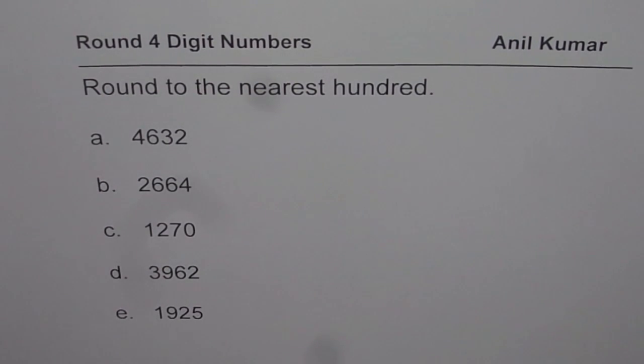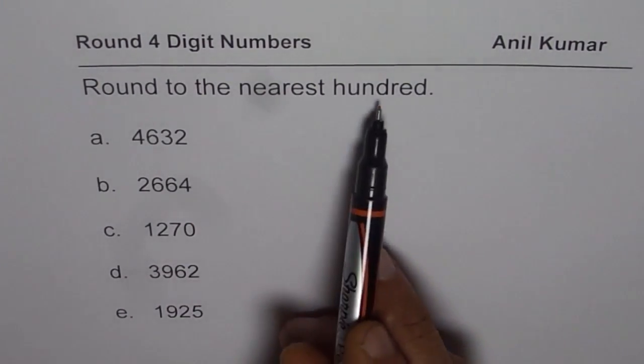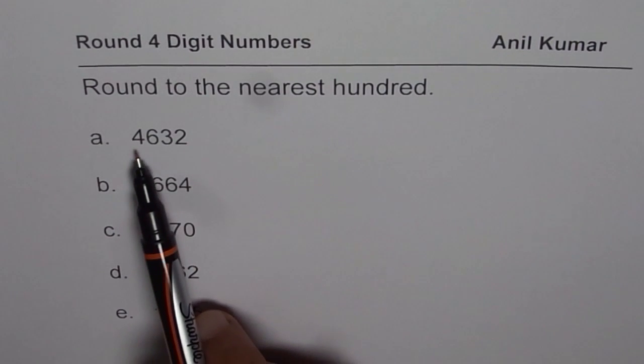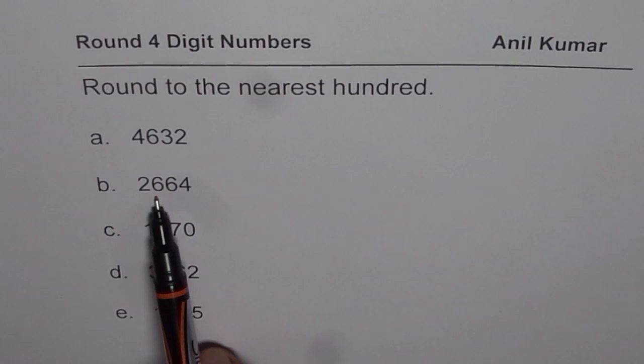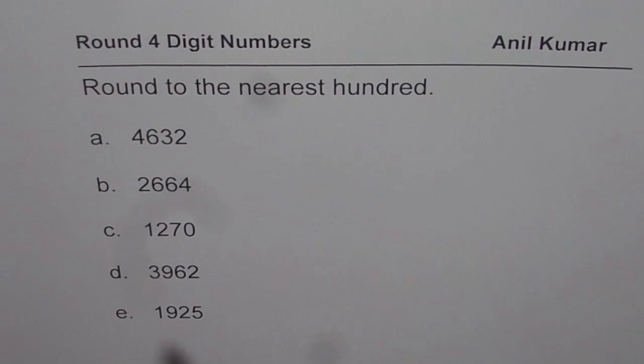So the question here is round to the nearest hundred. The numbers are 4,632, 2,664, 1,270, 3,962, and 1,925.